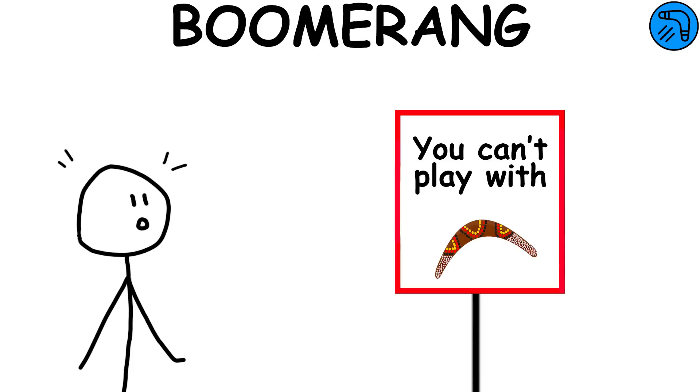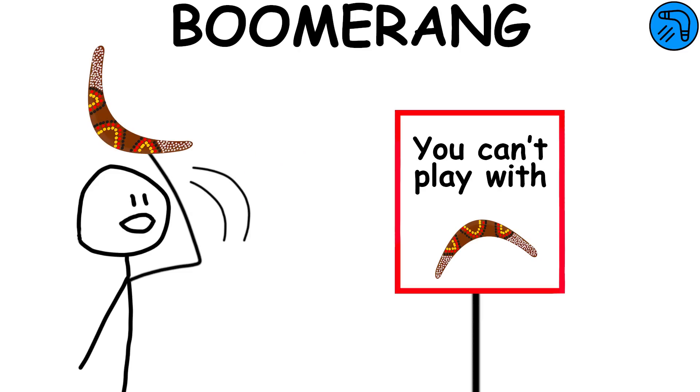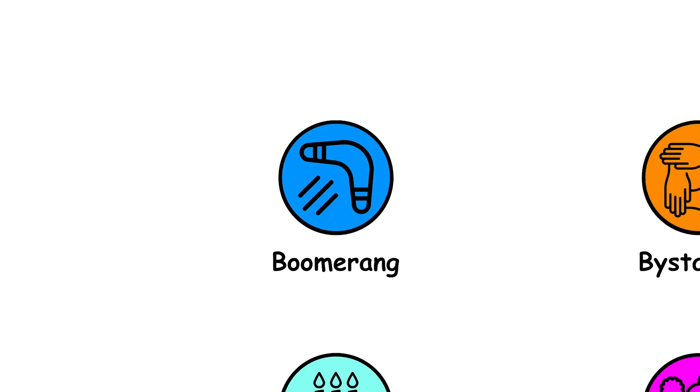Boomerang effect. The boomerang effect occurs when trying to persuade someone has the opposite effect. It often happens when restricting someone's freedom of choice, leading to a kind of rebellion.